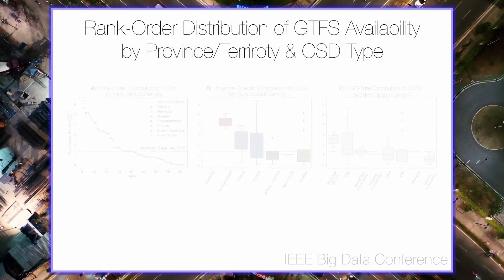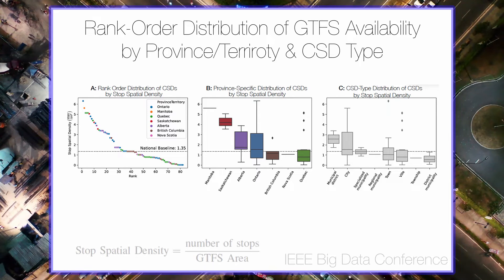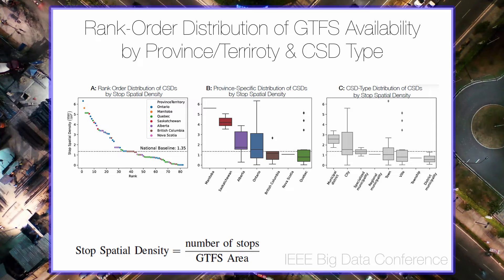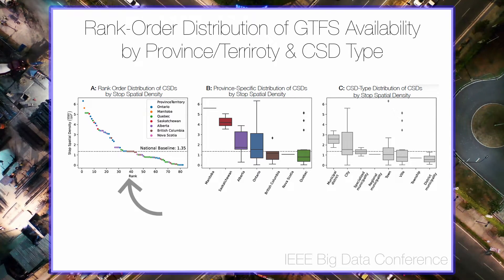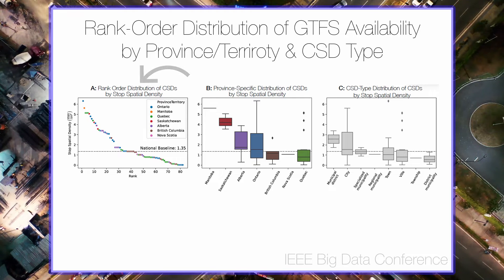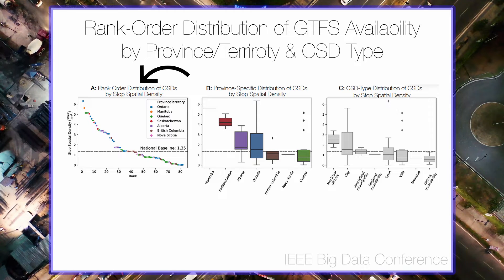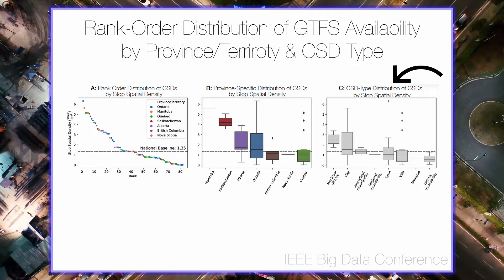We then sought to evaluate stop spatial density by both province and territory and across CSD types. The stop spatial density defined in this work is essentially a heuristic measure of the availability of public transit offering in a given CSD controlling for the service area. By comparing how individual CSDs relate to a national baseline — defined as the median stop spatial density across all CSDs — both general and specific trends may emerge. We plot the rank order distributions of CSDs colored by province and territory, and group province-specific distributions as box plots in decreasing median stop spatial density, and similarly for CSD type distributions.